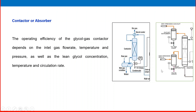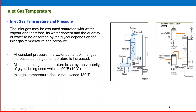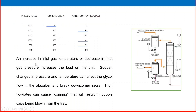This small picture just shows the absorption part we are discussing. Number one is a very important process variable: inlet gas temperature and pressure. The inlet gas may be assumed saturated with water vapor, and therefore its water content — and the quantity of water to be absorbed by the glycol — depends on the inlet gas temperature and pressure. At constant pressure, the water content of the inlet gas increases as the gas temperature increases.